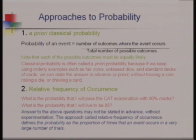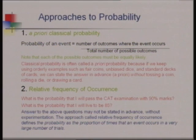Now suppose we are asked: what is the chance that you will pass in the CAT examination, or that you will live to be 85? In such cases, we do not know in advance what all possible outcomes may be. So the classical approach does not work, and instead we use the relative frequency approach. In this approach, you conduct an experiment — for example, you appear in 10 mock tests, and if you pass 8 times, you estimate an 80% chance of passing the final CAT examination.